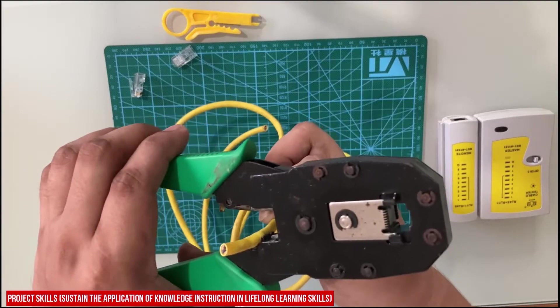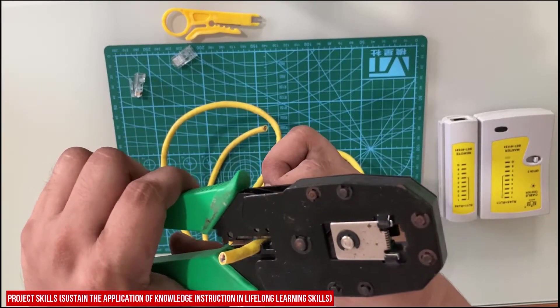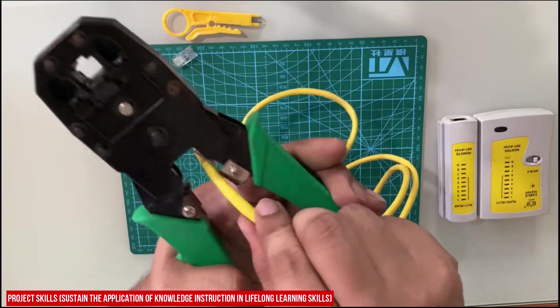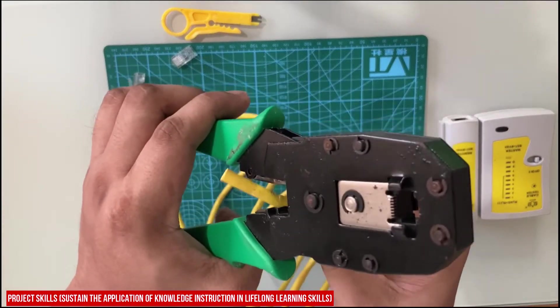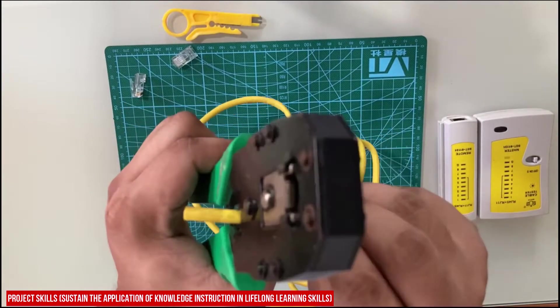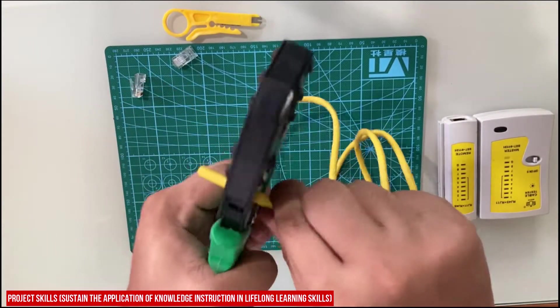Carefully strip the cover of the wires. Make sure that you do not damage any of the smaller wires found inside it, as this can cause problems in regard to the integrity of the wire. Damaging the smaller wires will lead to loss of connection.